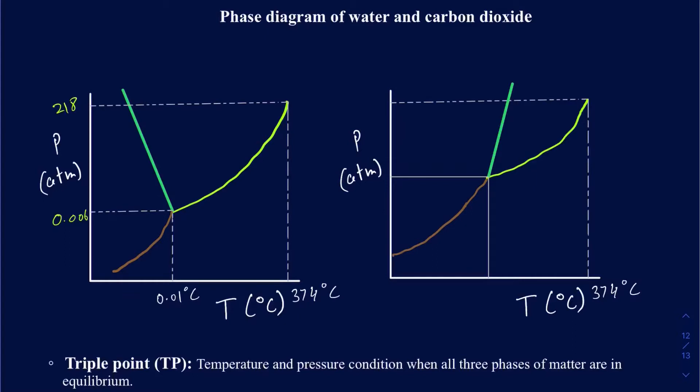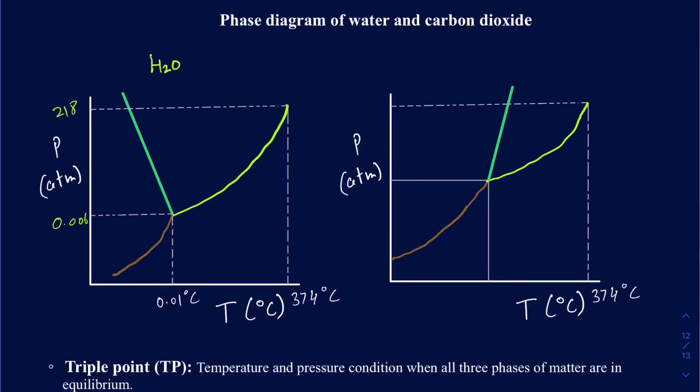Phase diagrams talk about how the transition takes place between solids and liquids, or how liquids and vapor are going to be in equilibrium — or the gas state is going to be at equilibrium — under what conditions of pressure and temperature. The first one is going to be for water, and the second one is for CO₂. We'll talk about water first and then move on to carbon dioxide.